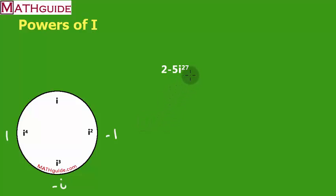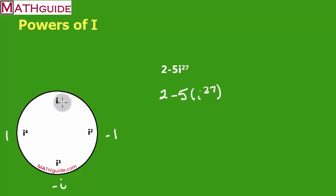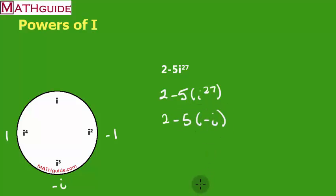Next problem: we pluck out i to the twenty-seventh and figure out what it equals. Every multiple of four lands on 1 — so four is 1, eight is 1, twelve, sixteen, twenty, twenty-fourth. From twenty-fourth, we count three more: twenty-fifth, twenty-sixth, twenty-seventh — that's three past a multiple of four, so i to the twenty-seventh equals i cubed, which is negative i. So all of i to the twenty-seventh is negative i, and negative 5 times negative i gives us 5i.